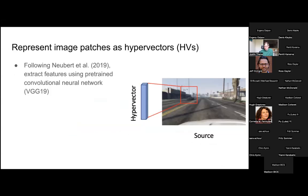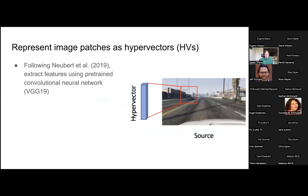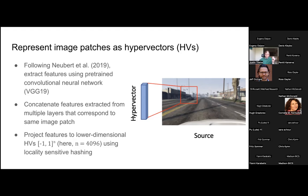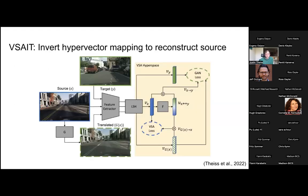We follow the Neubert et al. method and extract image features using a pre-trained convolutional neural network — specifically VGG-19 — extracting features from multiple layers. We concatenate those features corresponding to roughly the same image patch into a very high-dimensional feature vector, then use locality sensitive hashing to project those high-dimensional vectors into lower-dimensional hypervectors with dimensionality of 4096. These are continuous hypervectors in the range of negative one to one.